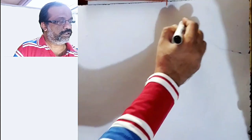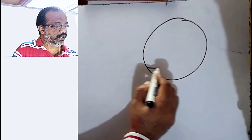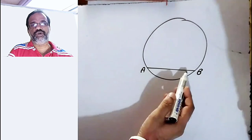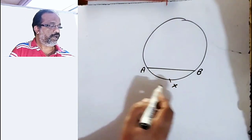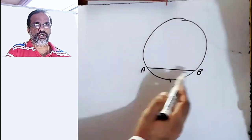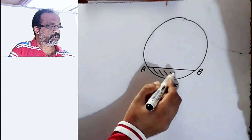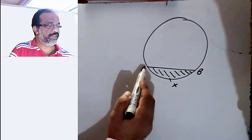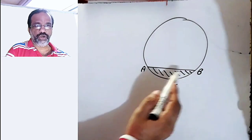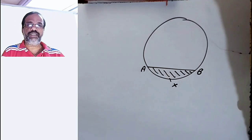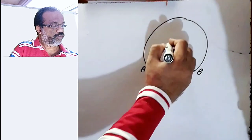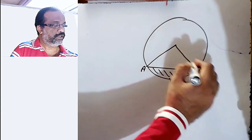I am drawing one circle. This is the chord AB. Now this chord AB has one corresponding minor arc — arc AXB. This region between the chord and the arc is called the segment of the circle. The region between the chord and its corresponding minor arc is called the segment of a circle. For this segment there is one corresponding central angle, denoted by theta.